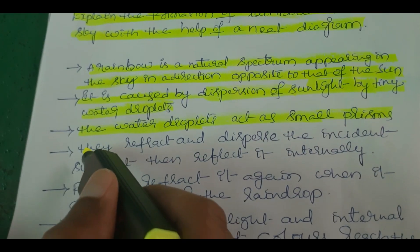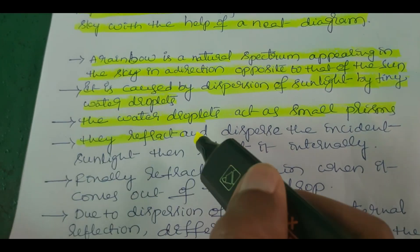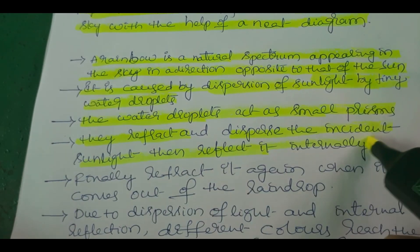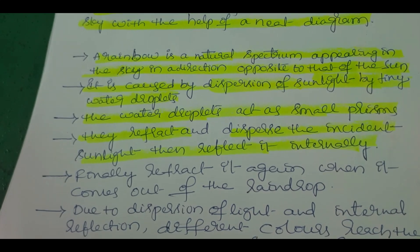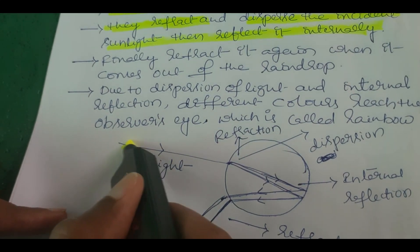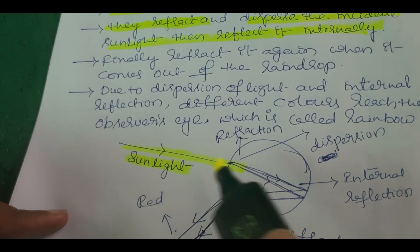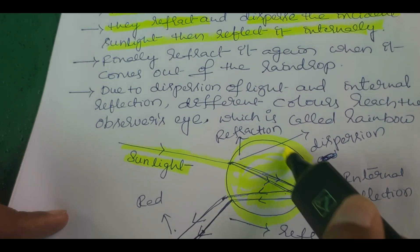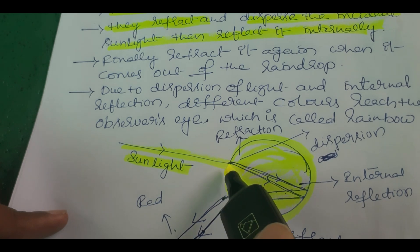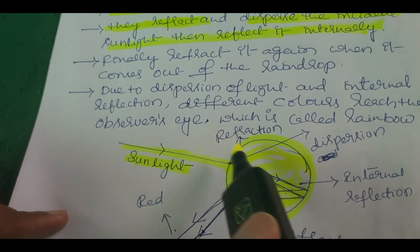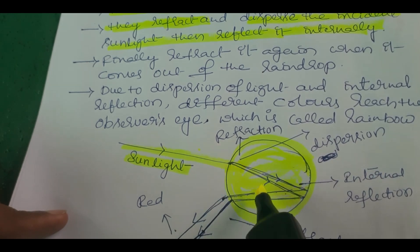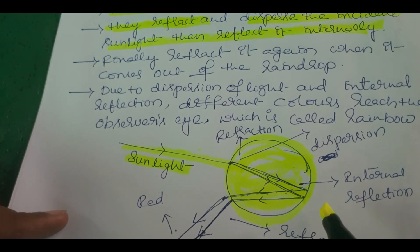Please observe the diagram. This is a sunlight ray and this is a water droplet in circular shape. What happens here — dispersion and refraction occur. The light ray enters the water droplet, bends as it enters, then disperses — splitting into seven colors.